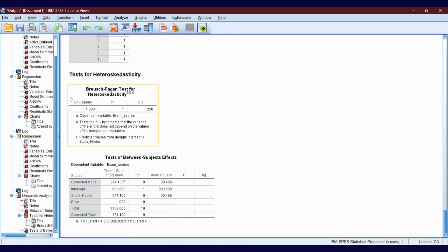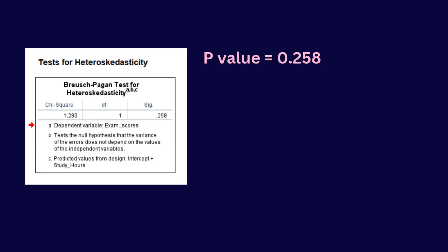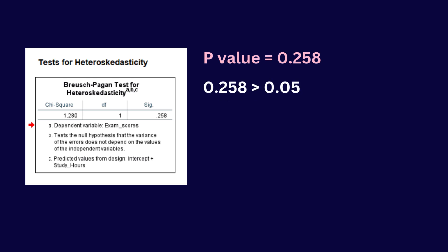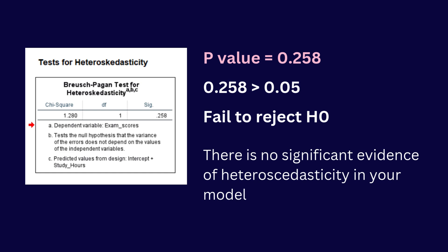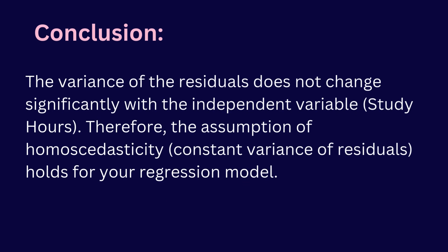We got our results. Let's interpret them. According to the output, our p-value is 0.258. Since 0.258 is greater than the common significance level of 0.05, there is not sufficient evidence to reject the null hypothesis. We fail to reject the null hypothesis, indicating no significant evidence of heteroskedasticity in our model. The variance of the residuals does not change significantly with the independent variable, study hours. Therefore, the assumption of homoskedasticity — that is, constant variance of residuals — holds for our regression model.